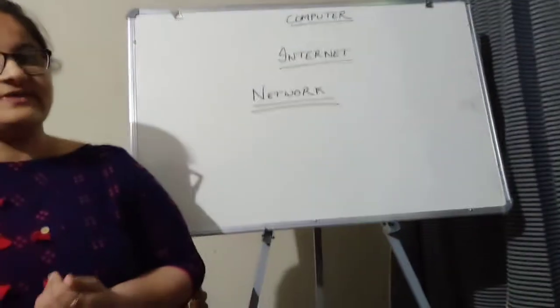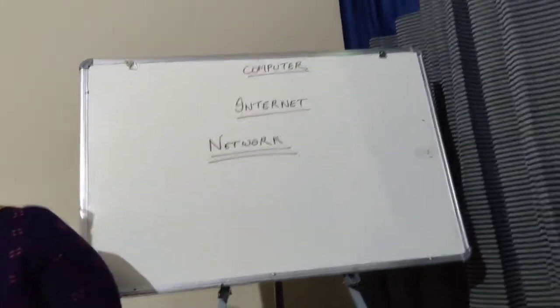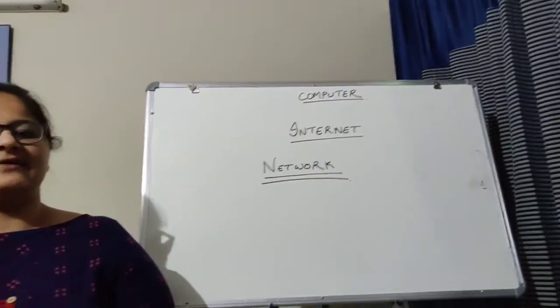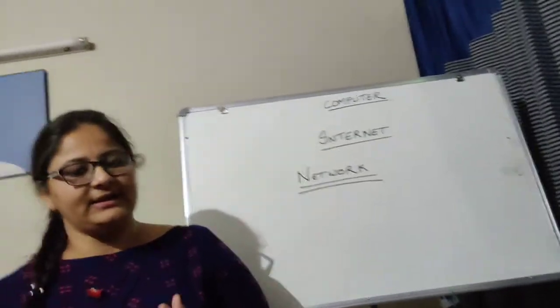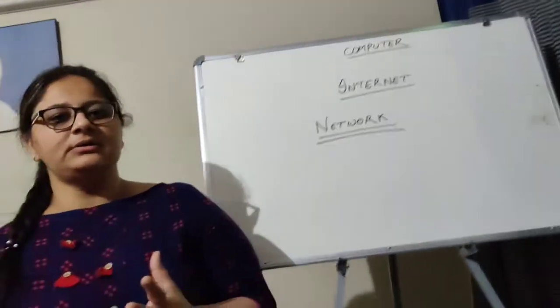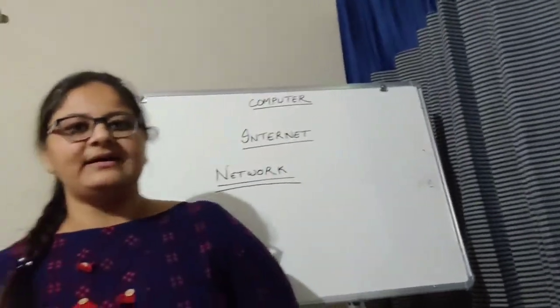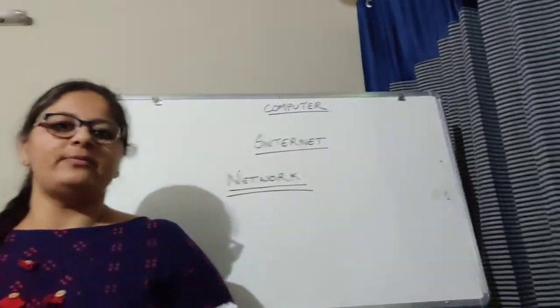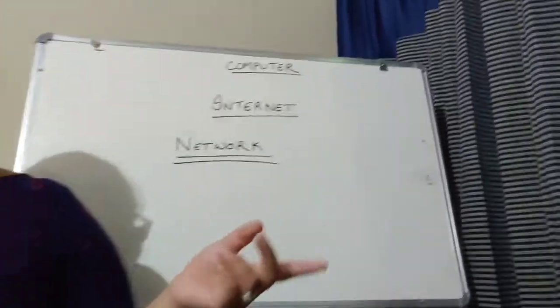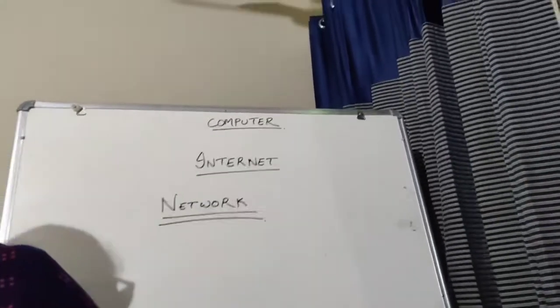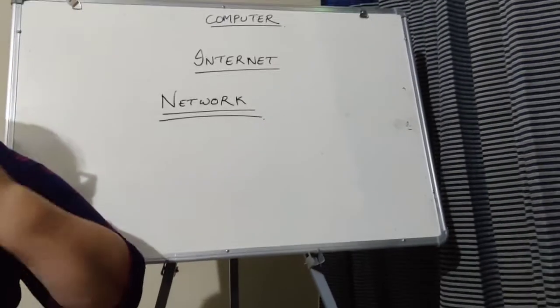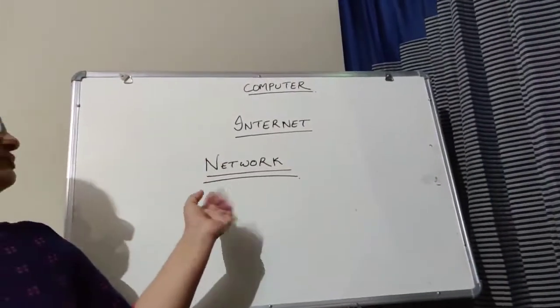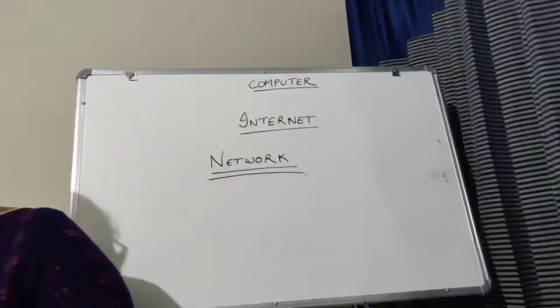Jaisi network of roads, waise network of nerves. Aur uske baad jab humare bahut sare computers connected ho jate hai, when millions of computers are connected together they form a computer network. Woh computer network kya kaam karta hai? They share the information. When they started sharing the information with each other that is through internet. So students I have told you about network. I have told you about internet.